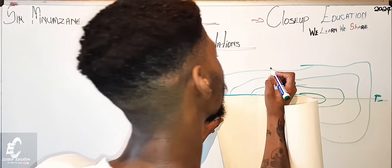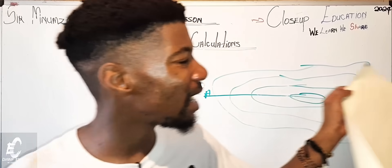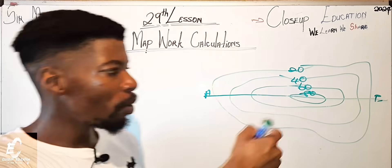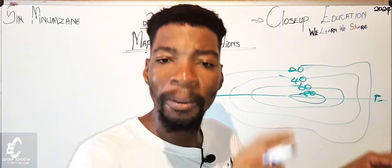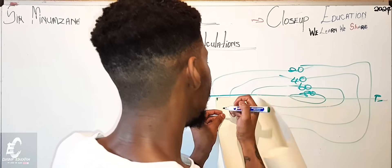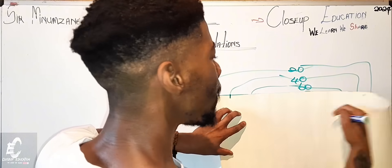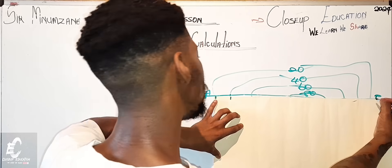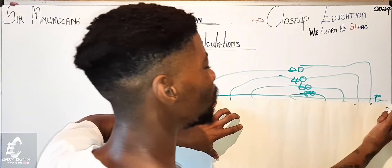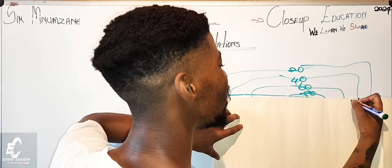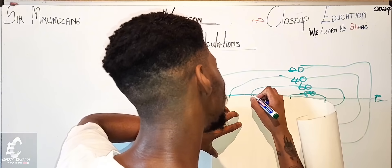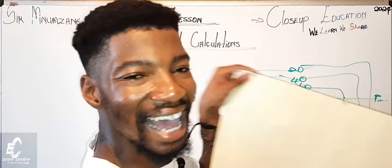Before drawing, let's give these contour lines numbers. Let's say this is 20, this is 40, this is 60, and this is 80. In a topographic map, contour lines are usually 20 meters apart — a 20-meter interval. You place your paper and draw a line for each contour. When you draw the 20 on side A, you must also draw another line for 20 on side B, and the same for 40, 60, and 80.